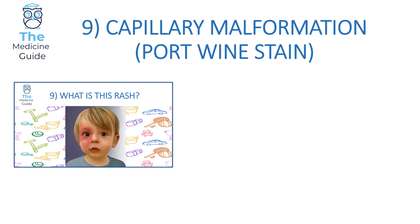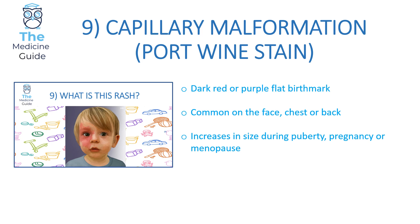Rash 9 is an example of a capillary malformation, or port wine stain. A child presents with a dark red or purple flat birthmark, commonly found on the face, chest or back. This rash increases in size during puberty, pregnancy or menopause.